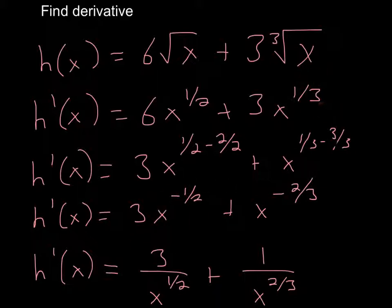So that will give you 3x to the negative 1 half. Same thing here. Just bring that 1 third down. 3 times 1 third is just 1. And then here, just once again, subtract by 1. 1 can be written as 3 over 3. So that will become x negative 2 over 3.